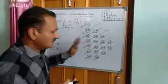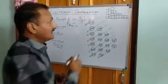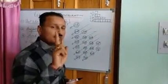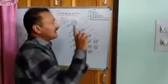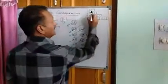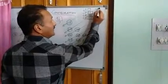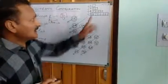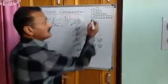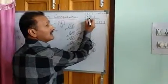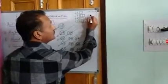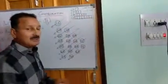One more thing that you must keep in mind: the S subshell has one orbital, and every orbital can accommodate a maximum of two electrons. So any S orbital can accommodate a maximum of two electrons. As far as your P subshell is concerned, it has three orbitals. Every orbital can accommodate a maximum of two electrons, so P can accommodate a maximum of six electrons — that is two times three equals six.